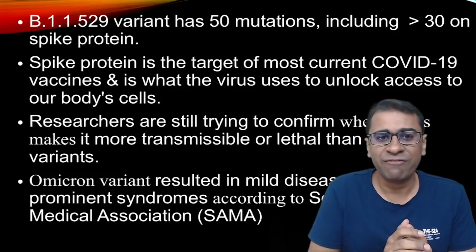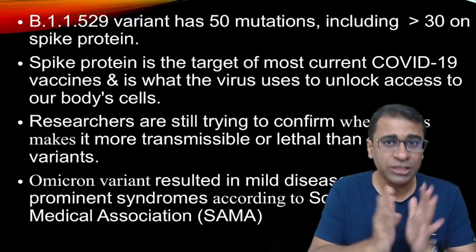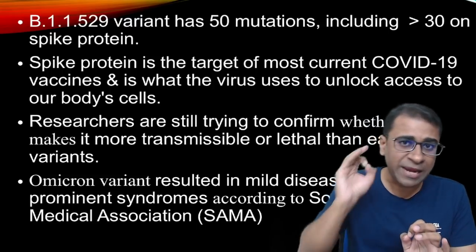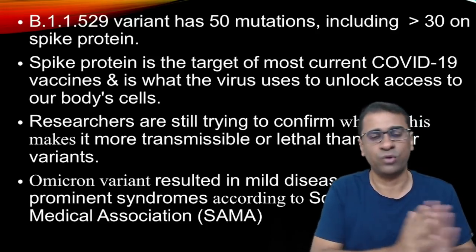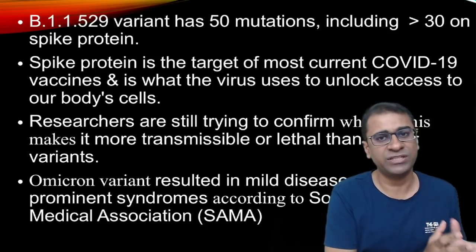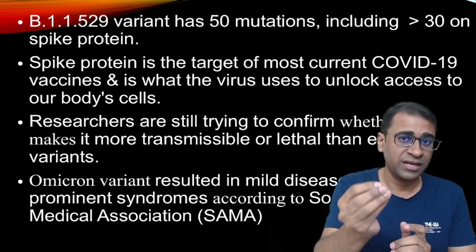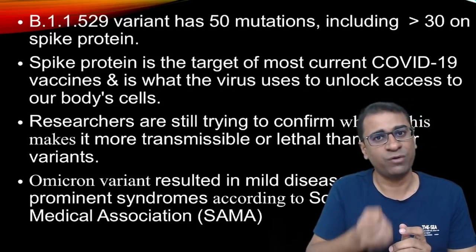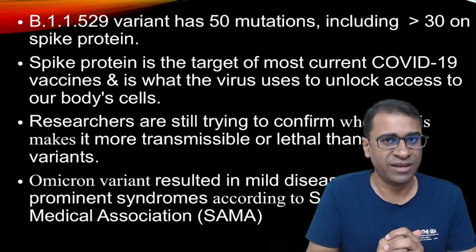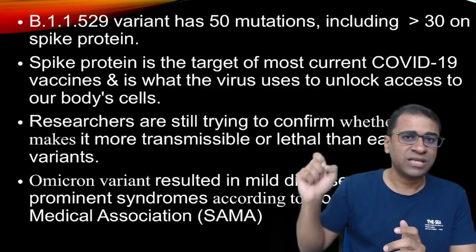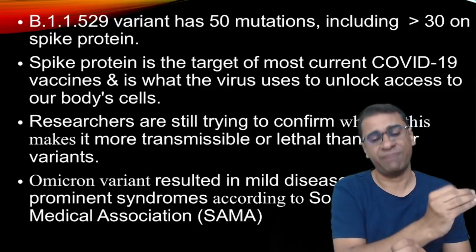This B1.1529 has over 50 mutations, including 30 of them on the spike protein. The spike protein is a major target of most of the vaccines used throughout India — for example, Covishield and Covaxin, both of which are actually based on the spike protein. When we look at vaccine efficacy, what you measure is the S protein antibody, which you can measure as a neutralizing antibody. So because of the many changes in this S protein, these vaccines may or may not be effective.